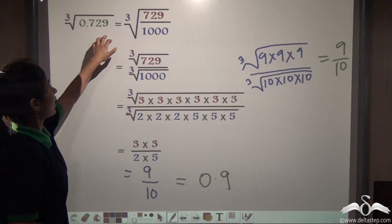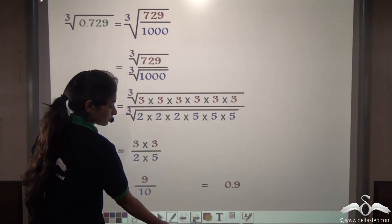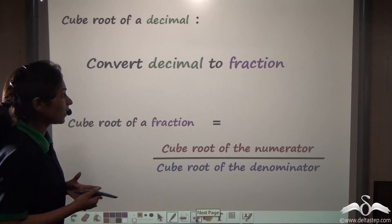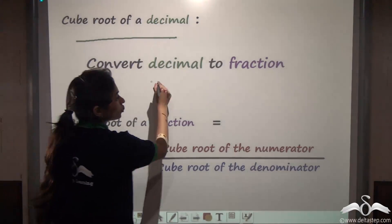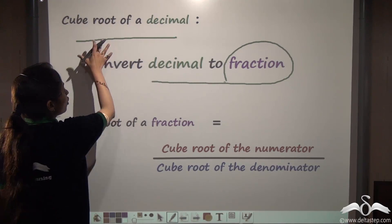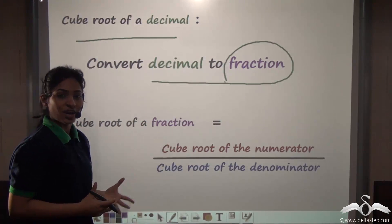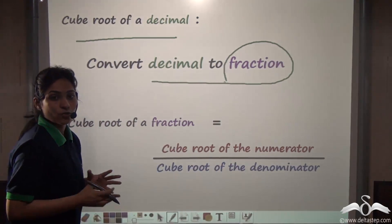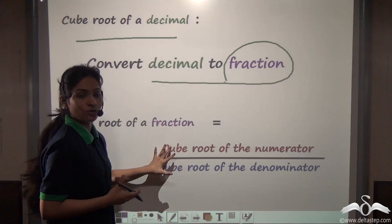Remember: if you are given a decimal number to cube root, write the answer in decimal form only — do not leave it as a fraction. To summarise: to find the cube root of a decimal, first convert the decimal to a fraction, then cube root the numerator and denominator separately. Whenever you have a decimal to cube root, convert it to a fraction and use the cube root of a fraction formula.